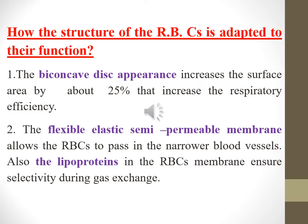How is the structure of RBCs adapted to their function? The bi-concave disc appearance increases the surface area by about 25%, which increases respiratory efficiency. The flexible, elastic, semi-permeable membrane allows RBCs to pass through narrower blood vessels. Also, the lipoproteins in the RBC membrane ensure selectivity during gas exchange.